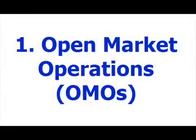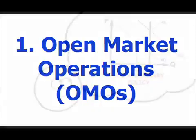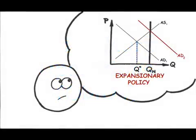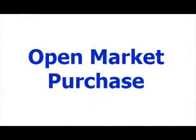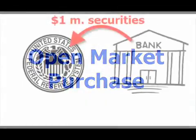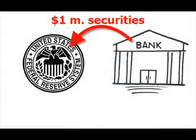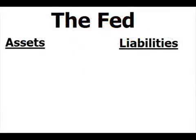Open market operations. Just as with fiscal policy, monetary policy can be either expansionary — stimulating the economy — or contractionary — slowing the economy. If open market operations are the buying and selling of government securities, which is expansionary and which is contractionary? Let's look at an example of an open market purchase, where the Fed buys $1 million of securities — or government bonds — from Wells Fargo. The Fed sees a change in its asset mix as it increases its holdings of securities and decreases its holdings of cash, depositing $1 million into Wells Fargo's account.